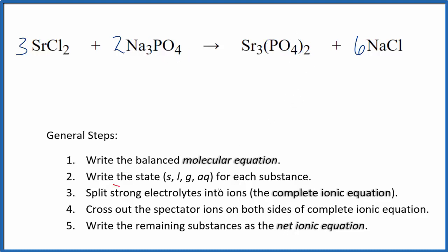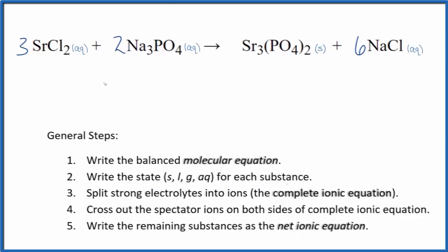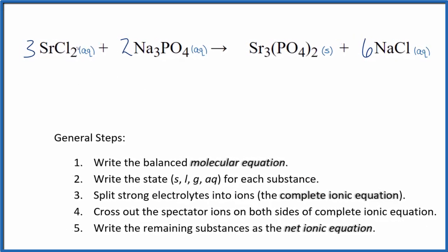Now we can write the state for each substance. That looks like this. So if you know your solubility rules, compounds with the chloride ion in general, they are soluble. And then compounds with the sodium ion, they're soluble. So all of these things are going to be aqueous. They're going to dissolve into their ions.